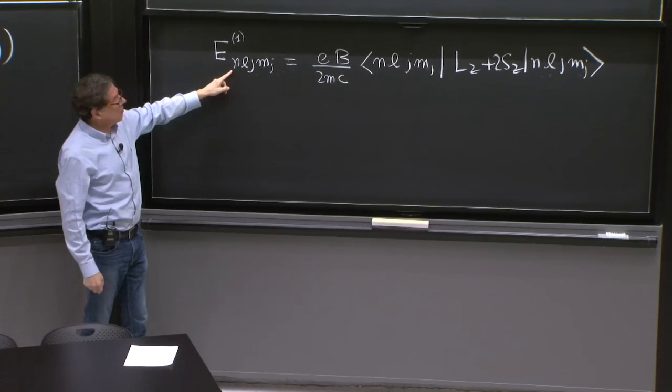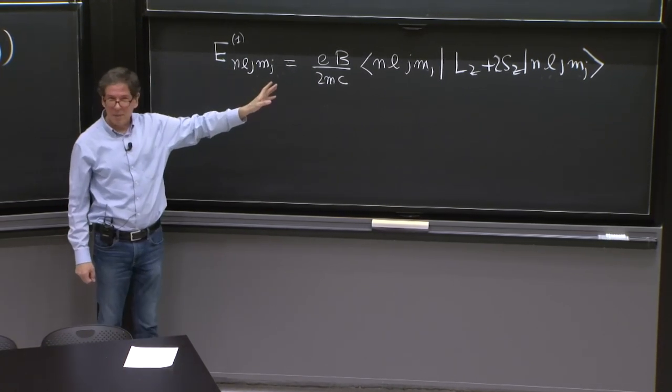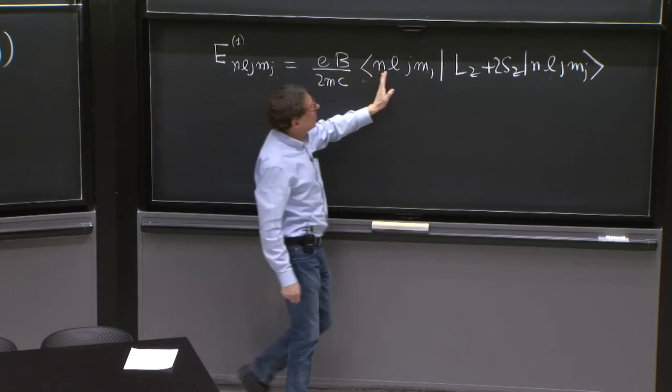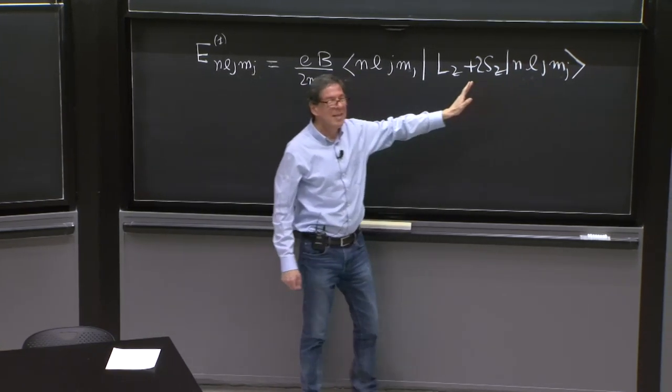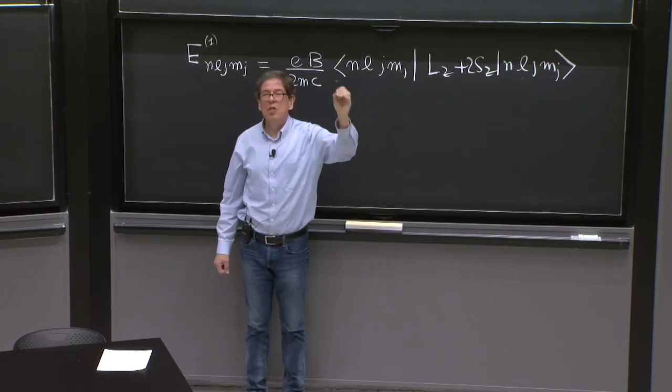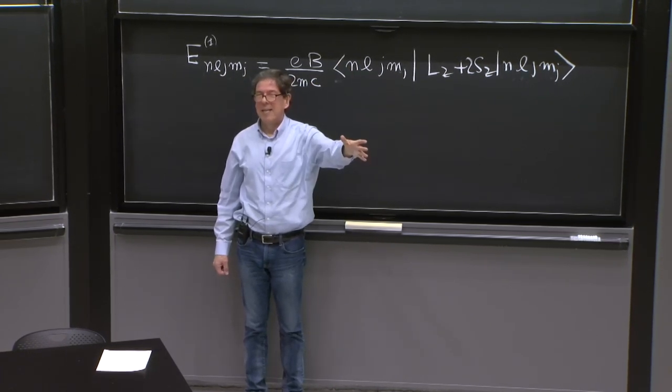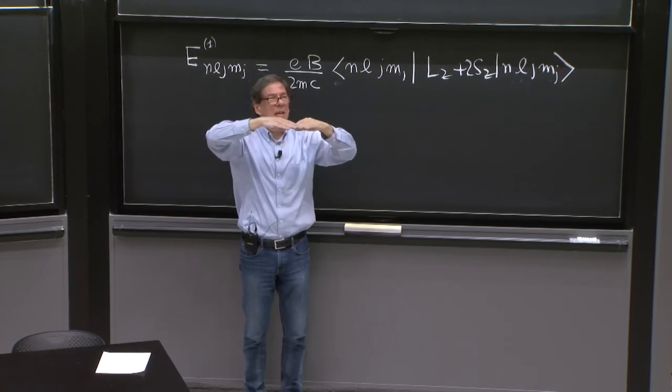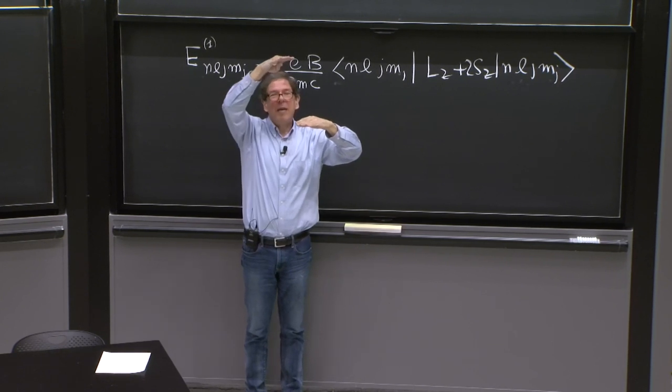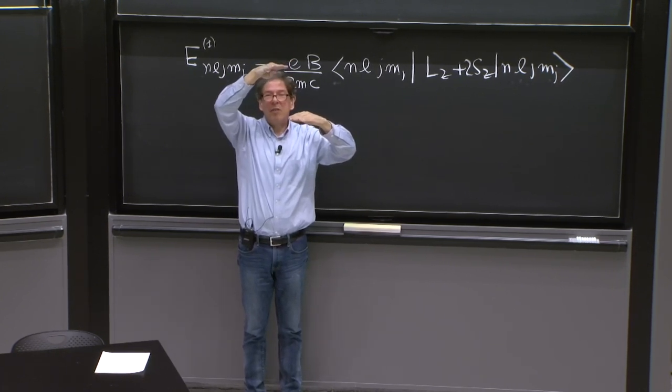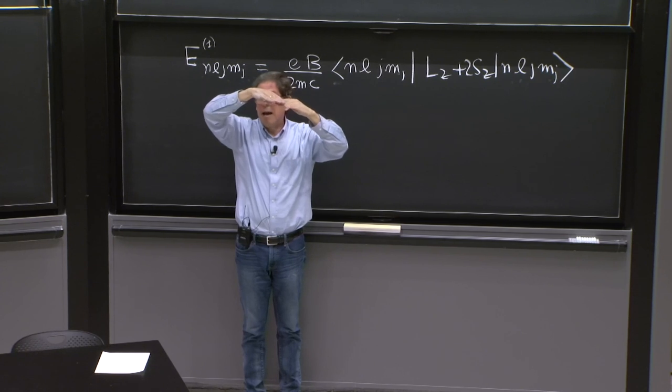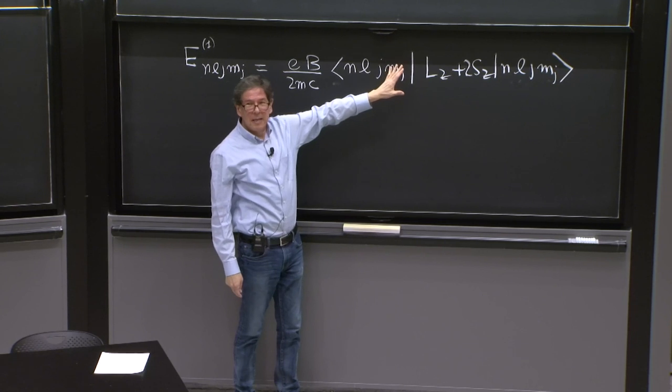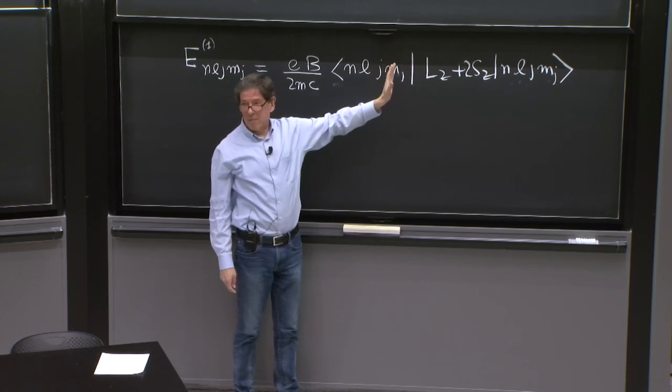The remarkable thing of this formula, and it's going to keep us busy for about 10, 15 more minutes, is that this thing, this matrix element, is proportional to Mj. So the state split proportional to the M quantum number, where the state with M equal 3/2 will split three times as much as the state with M equal 1/2. And that's not obvious here.